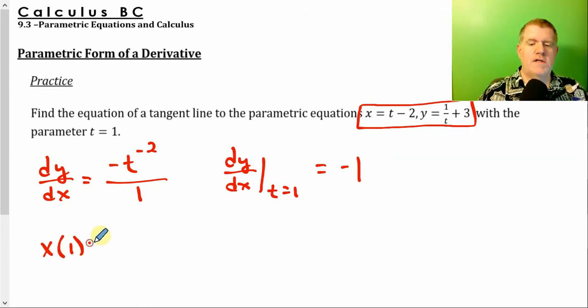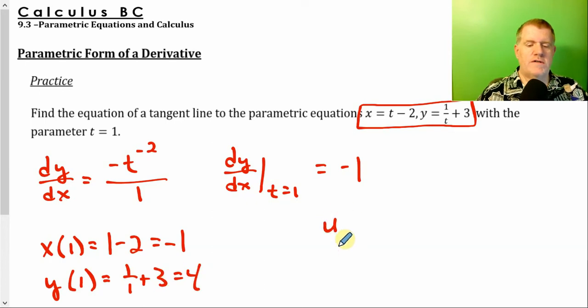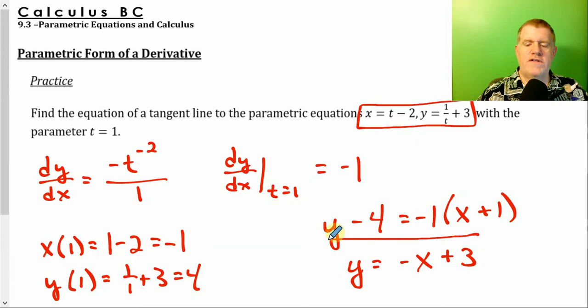Well, now we need a point. Well, I know that at t equals 1, x is going to be 1 minus 2, or negative 1. When I put 1 in for y, I'm going to get 1 over 1 plus 3, which is 4. So I have my point negative 1, 4, my slope of negative 1. Actually, my point was negative 1, 4. My slope was negative 1. So there's the equation of my tangent line in point slope form. But since this one looks pretty easy, we're just going to do that and call that the equation of the tangent line when t equals 1. And that's how we do it. That's it.